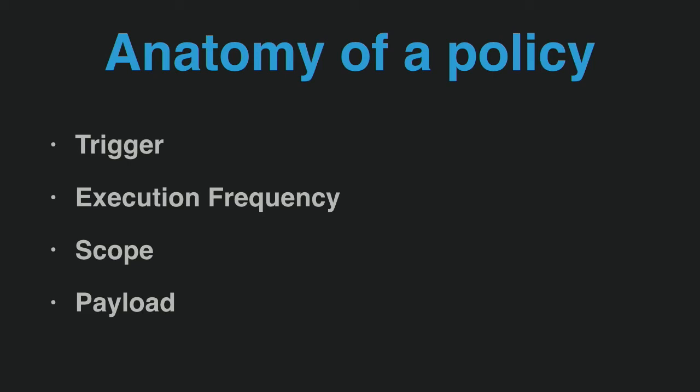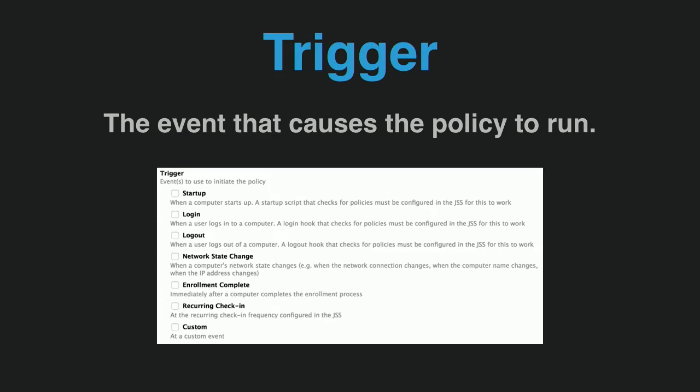I want to do a quick refresher on how policies in Jamf Pro work. There are four things you need for a successful policy: the trigger, the execution frequency, the scope, and the payload. The trigger is the event that causes the policy to run — whether it's the recurring check-in, login, logout, or a custom trigger — but you have to have a trigger or your policy will never run.